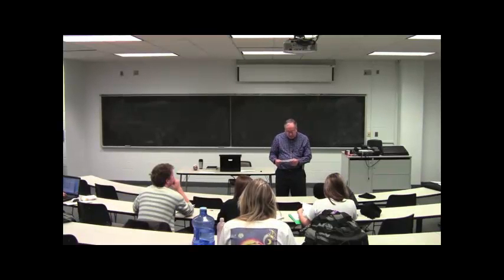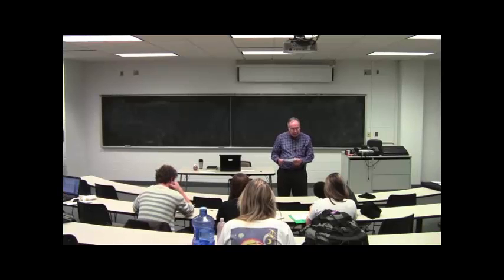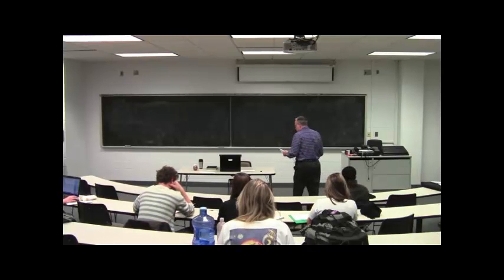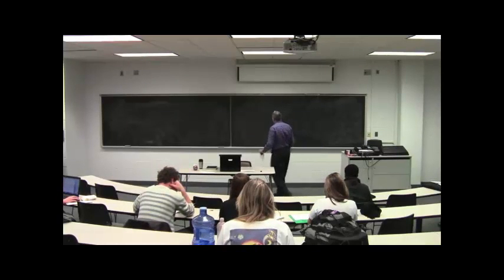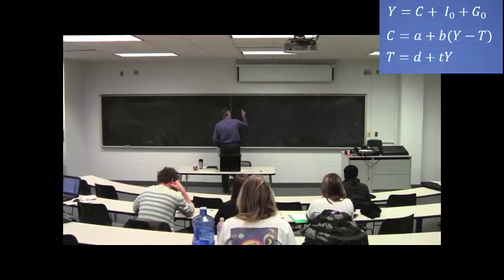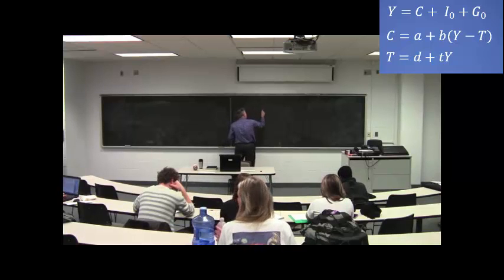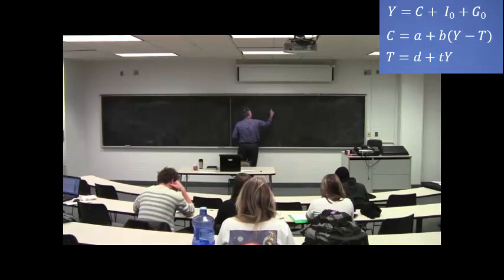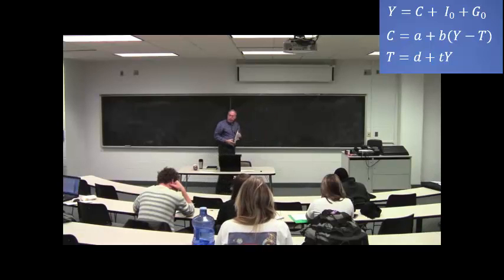But part b, explain the meanings of a, b, and t. And let me just write down the model here. Y equals C plus I plus G. This is your equilibrium condition.